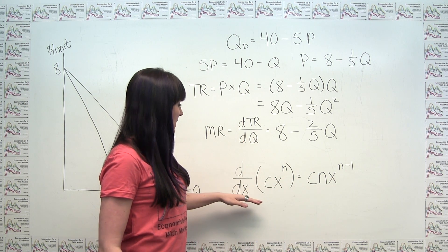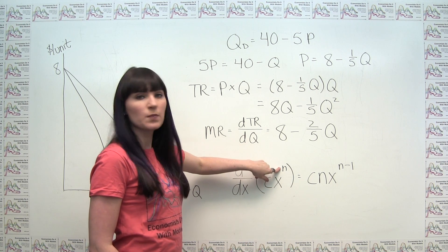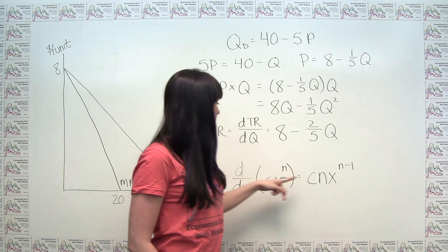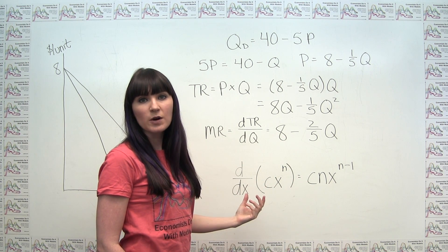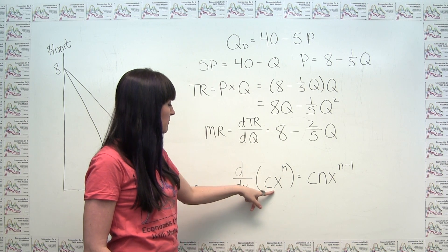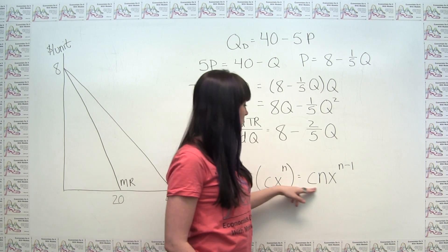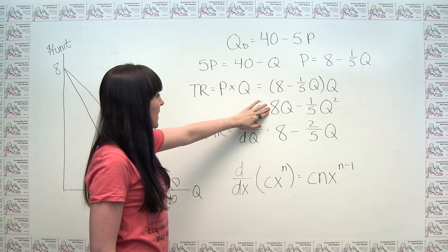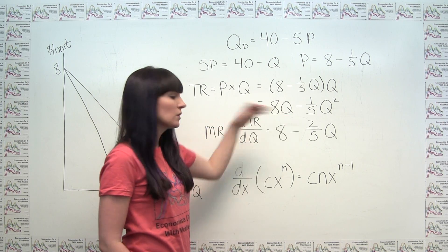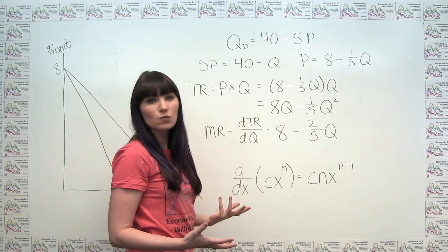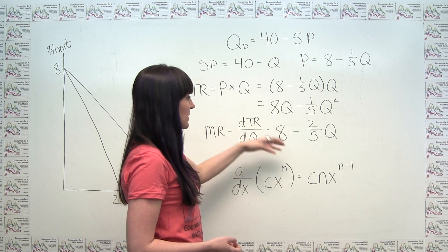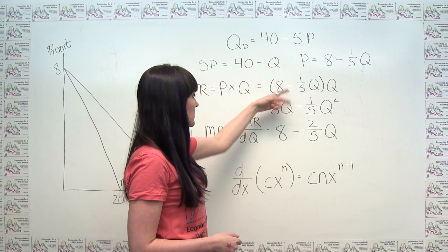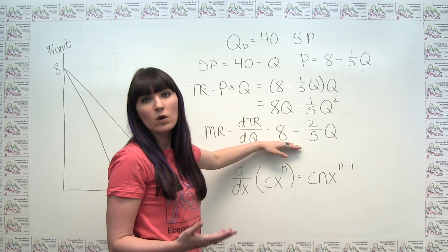When taking the derivative, we reduce the power of our variable by 1 — we have x to the n, and get x to the n minus 1. We also bring that power down in front as part of our coefficient. For 8Q, that's 8 times Q to the first, so c is 8 and n is 1. Bringing down the 1 gives 1 times 8 times Q to the zero, and since Q to the zero is 1, we're left with 8.